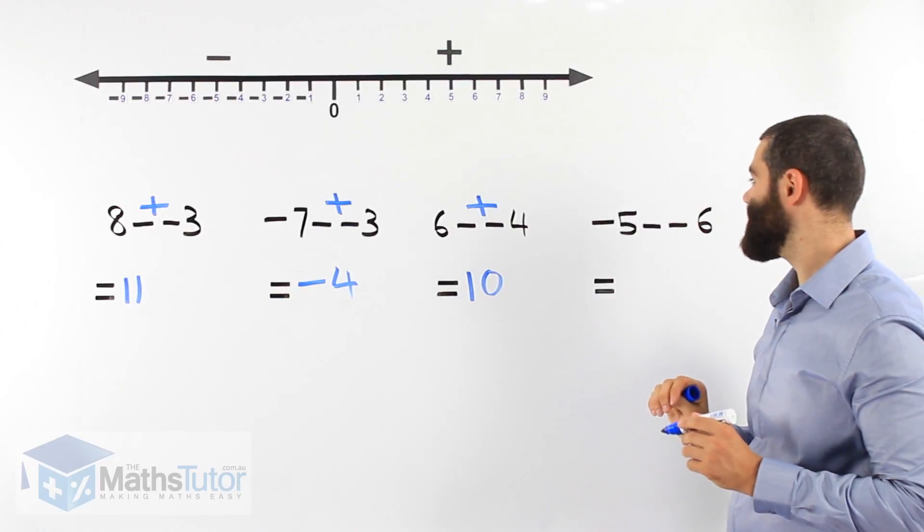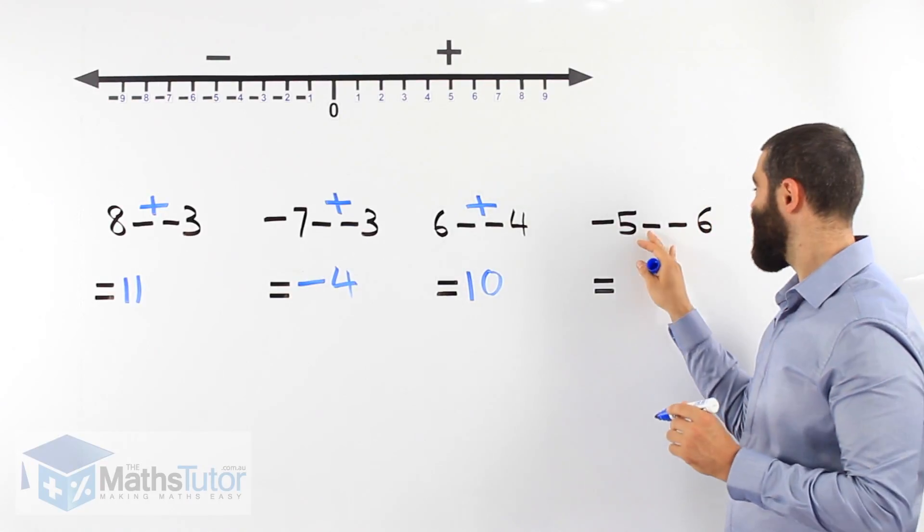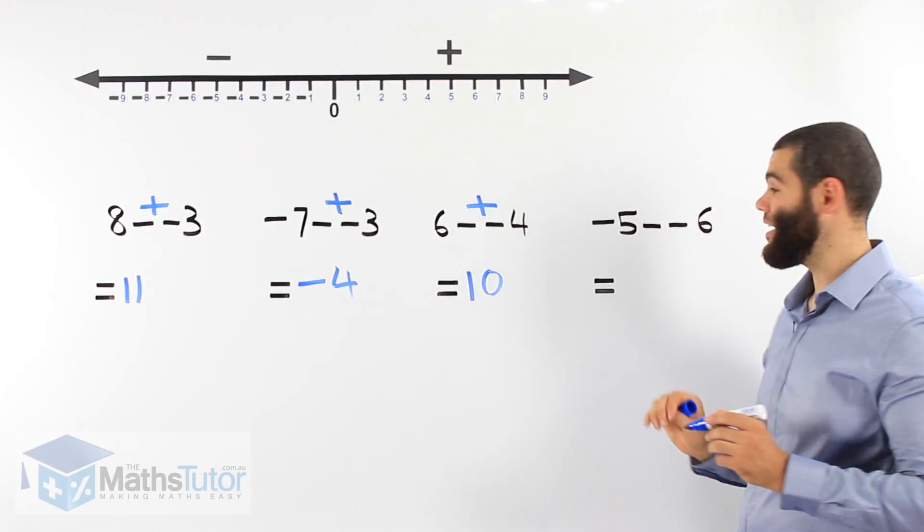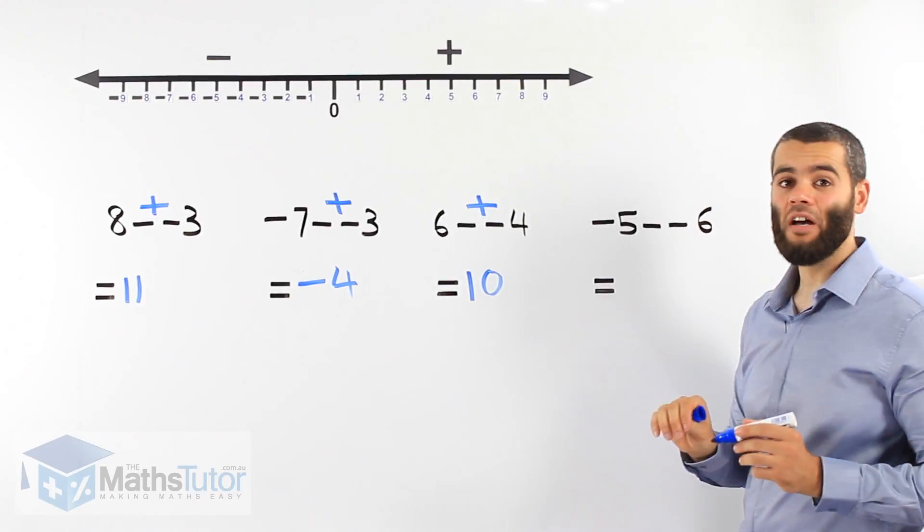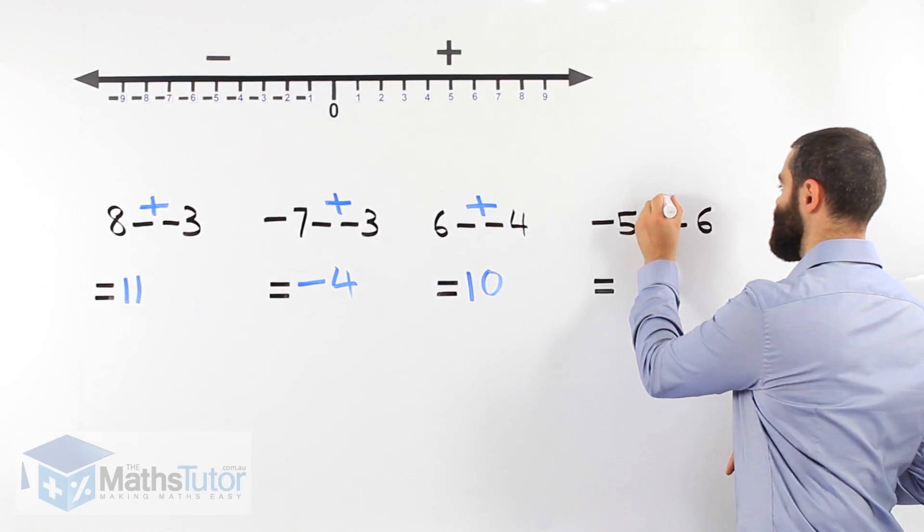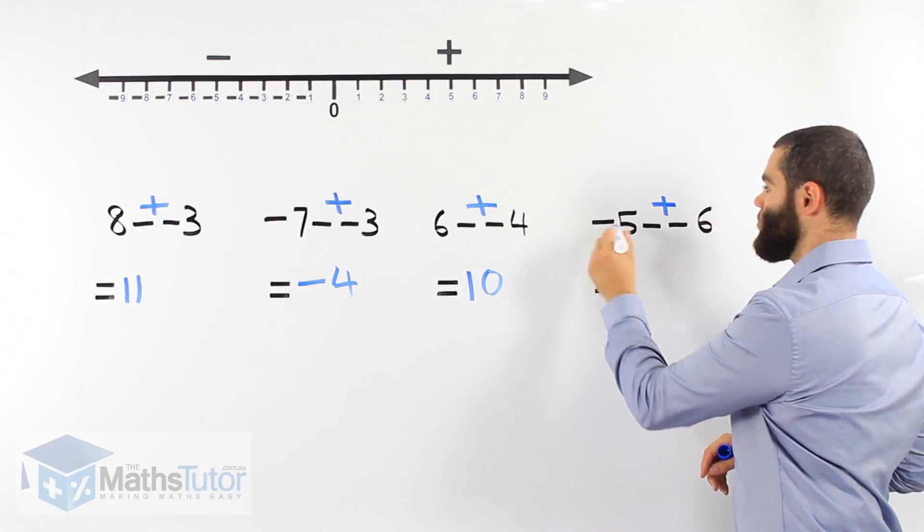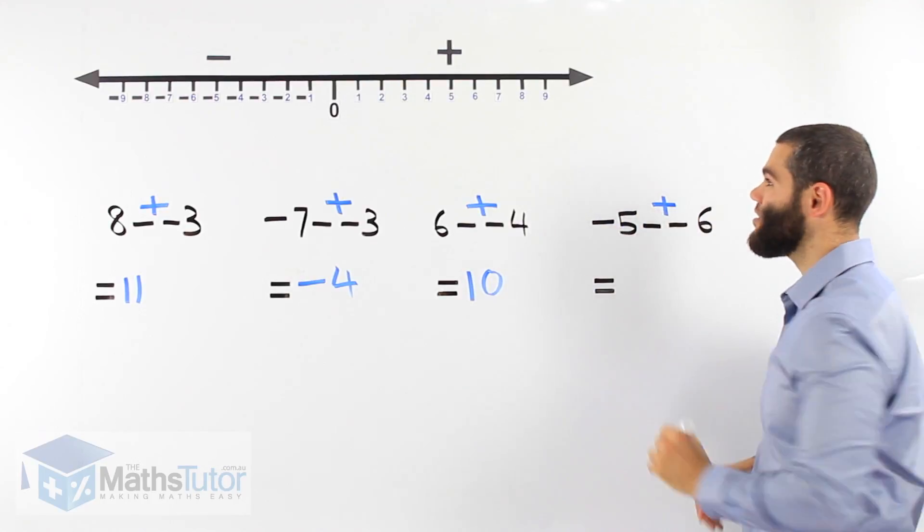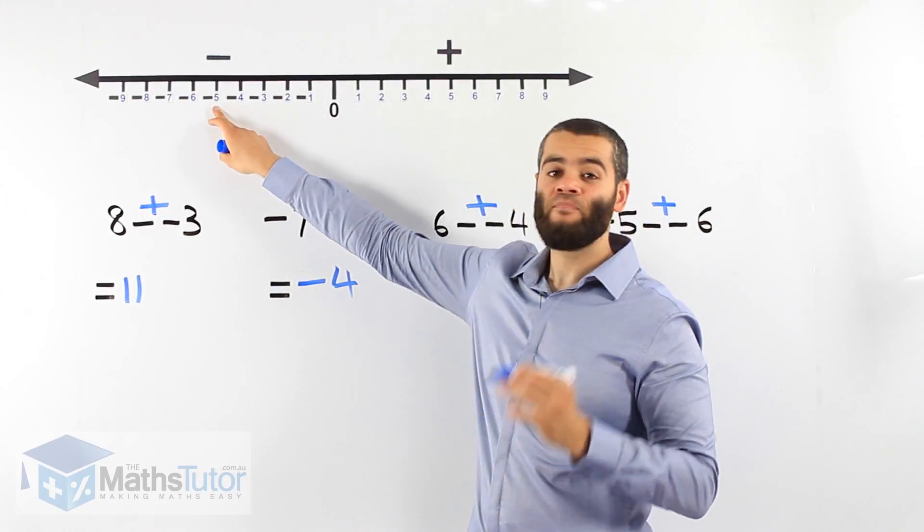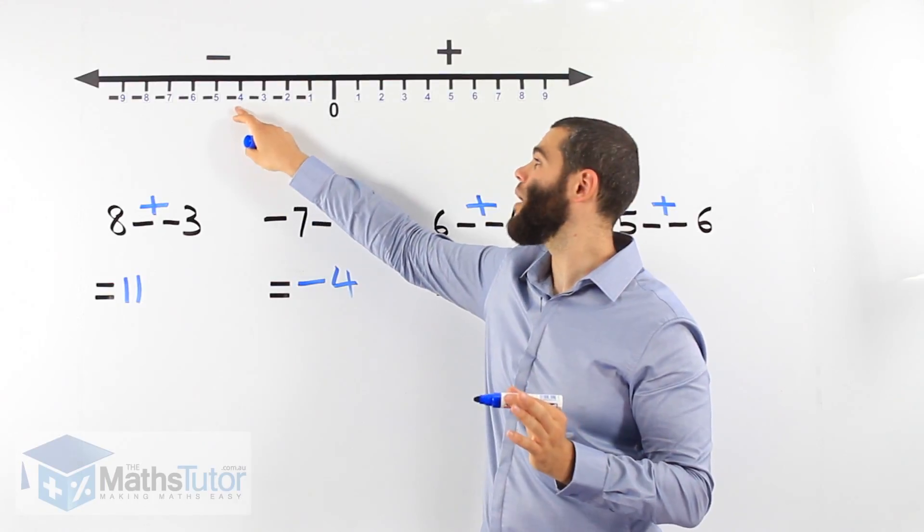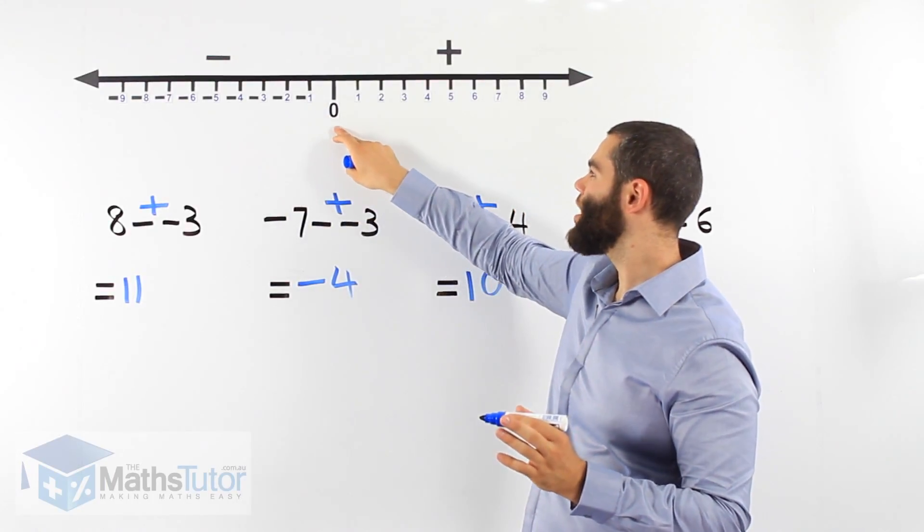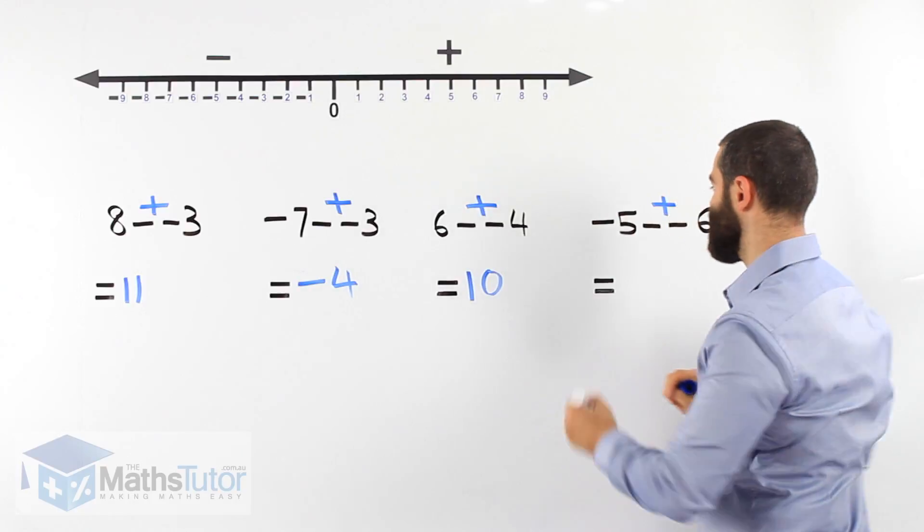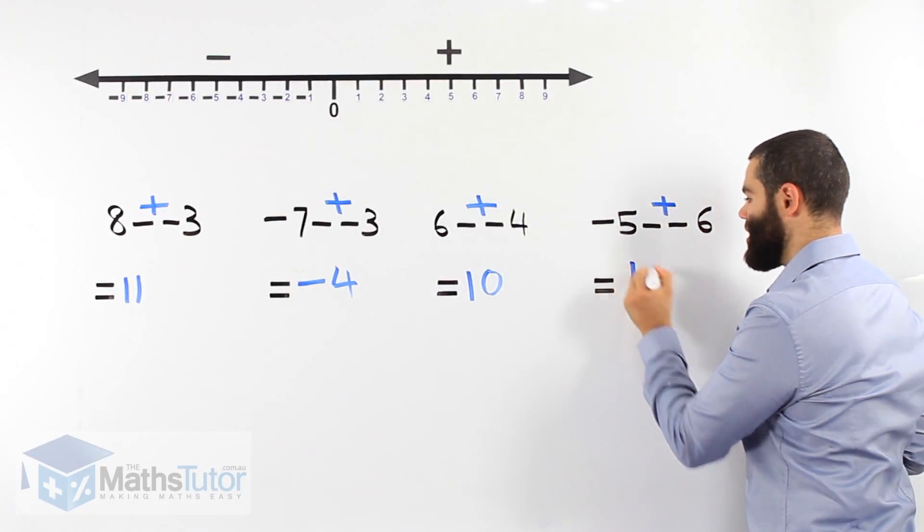Here we have negative 5 minus negative 6. Again, two negatives side by side become a plus. Minus 5 plus 6. We start at negative 5 and we add 6. 1, 2, 3, 4, 5, 6. Our answer is positive 1.